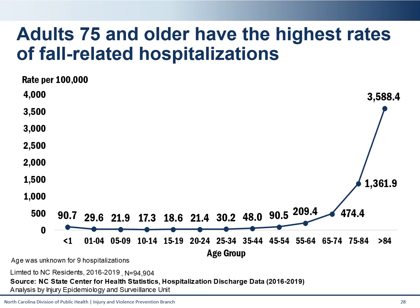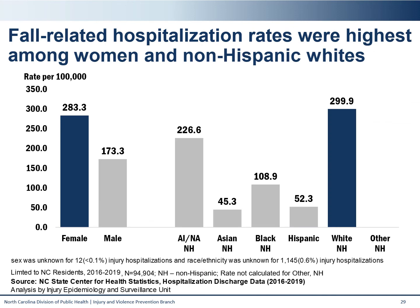When looking at fall-related hospitalization rates by age, we see that the highest burden is among older adults. As with the death data, rates begin to quickly increase with age, with the largest burden falling on those over 84 years old. For those 94,000 hospitalizations between 2016 and 2019, we have calculated rates by demographic group. Females have the largest burden of hospitalizations, although there is a greater difference between the genders. Non-Hispanic whites still have the largest burden of fall-related hospitalization, closely followed by non-Hispanic American Indians and Alaskan Natives, who also have a disproportionately high rate.